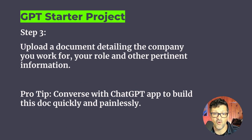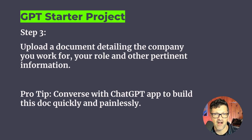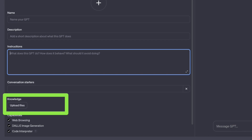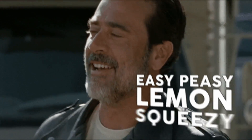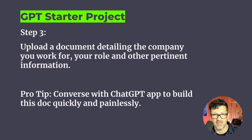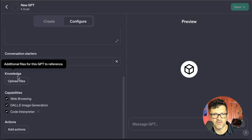Step three is to upload a document detailing the company you work for, your role, and other pertinent information. This is where you want to put the information you might be tempted to stuff into the instructions. An easy way to build this document is to converse with the GPT app — open it on your phone, click the headphones icon to speak, and say 'ask me a few questions about my company and job.' With 10 to 15 minutes of back and forth you can pull together a robust documentation of your work life to upload into the knowledge section.